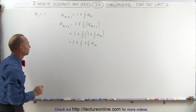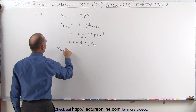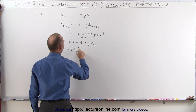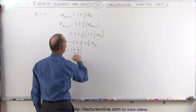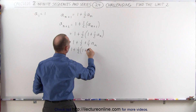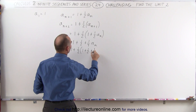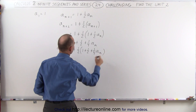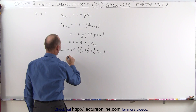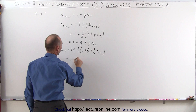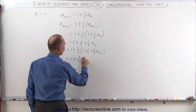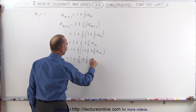Now we do it again. We have a(n+3) equal to 1 plus one-half times a(n+2), which equals 1 plus one-half times the quantity 1 plus one-half plus one-quarter times a_n. If we multiply this out and add the terms, we get 1 plus one-half plus one-quarter, which is three-quarters, plus one-eighth times a_n.